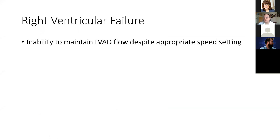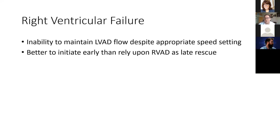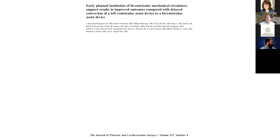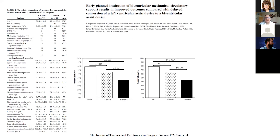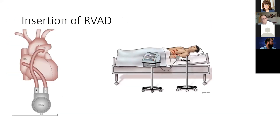When the RV has failed, you have inability to maintain adequate LVAD flow despite an appropriate speed setting. The moral of the story is: if you're thinking about an RVAD, you should probably do it — don't wait until it's too late. It is much better to place an RVAD early than to use it as a rescue strategy. Data from Penn shows that delayed BIVAD implantation has much worse outcomes than early primary BIVAD. When we put in an RVAD, we typically place a cannula in the right atrium for drainage and a cannula or graft onto the pulmonary artery for infusion, connected to a pump — we now use the CentriMag as a short-term RVAD.